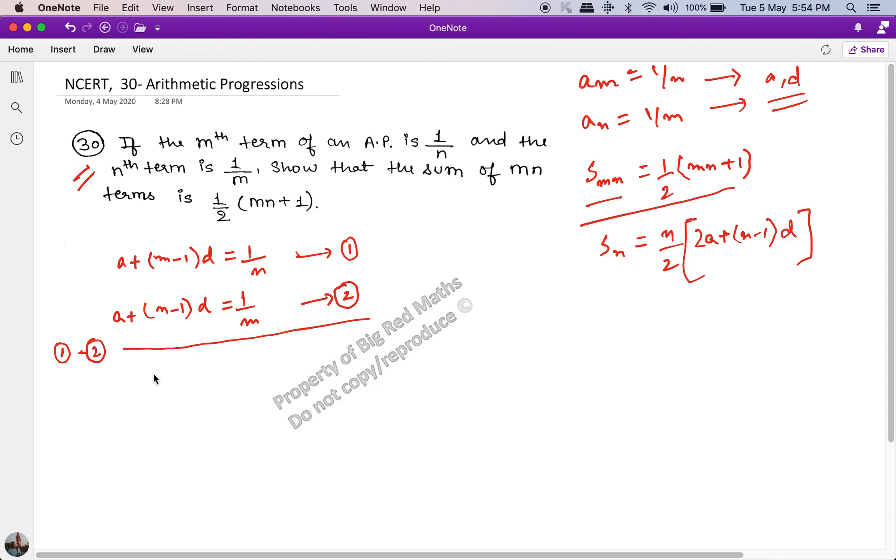The result would be: a will get cancelled, (m minus 1) minus (n minus 1) will be (m minus n).